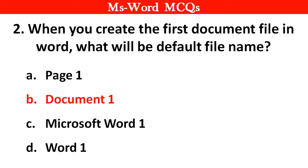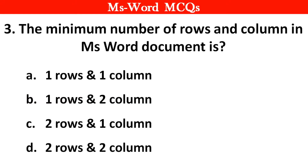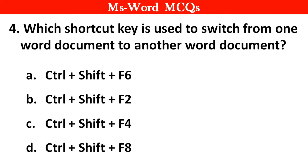Next question: The minimum number of rows and columns in an MS Word document is — right answer is option A, one row and one column. Next question: Which shortcut key is used to switch from one Word document to another Word document? Right answer is option A, Ctrl + Shift + F6.